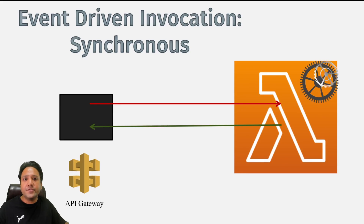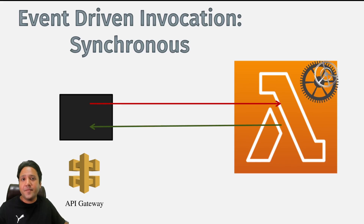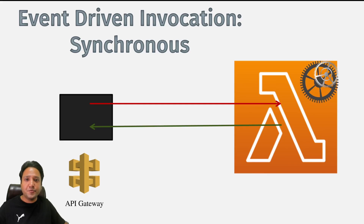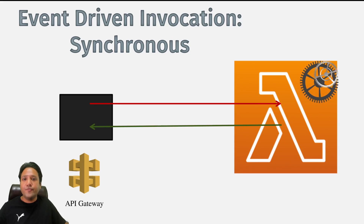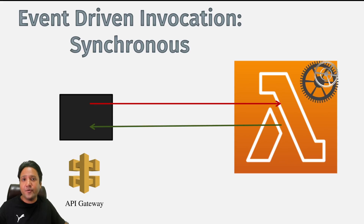A good example is API Gateway. When a web client calls an HTTP request to API Gateway, it triggers Lambda, and Lambda processes the request. Until the entire process is not complete, the web client will be blocked — it is still waiting for the response. When Lambda completes, it sends back the response to API Gateway, which passes it back to the HTTP client, and the client is then unblocked. Now, if Lambda fails for some reason — a timeout or something else — it is the responsibility of the HTTP client initiating the request to make a retry.